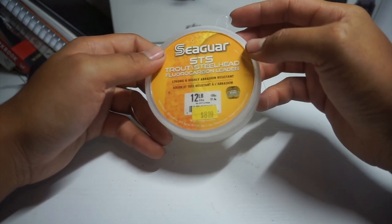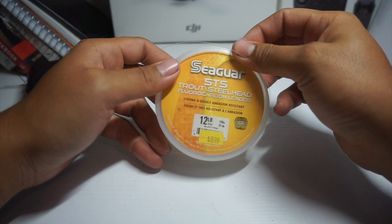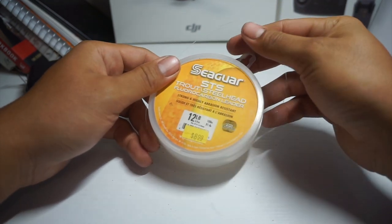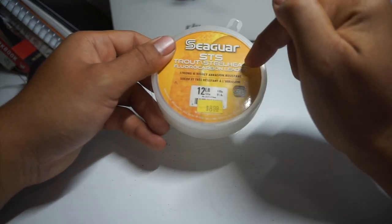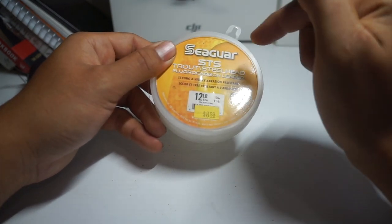This one I picked up at Charlie's but you can pick up other brands like Yozuri, I think J-Line is another one. But yeah, fluorocarbon line or any type of leader is what you need first.